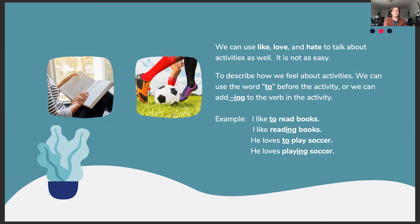We can use verbs such as like, love, and hate to talk about activities as well, but this can be a little tricky. To describe how we feel about certain activities, we can use the word 'to' before the activity, or we can add the suffix '-ing' to the verb in the activity. For example: 'I like to read books' or 'I like reading books'; 'He loves to play soccer' or 'He loves playing soccer.' By using 'to' and the suffix '-ing', we are identifying the noun as the activity in question, and then using our standard formula of subject plus verb plus noun to describe how we feel about it. It's really quite simple once you get the hang of it.